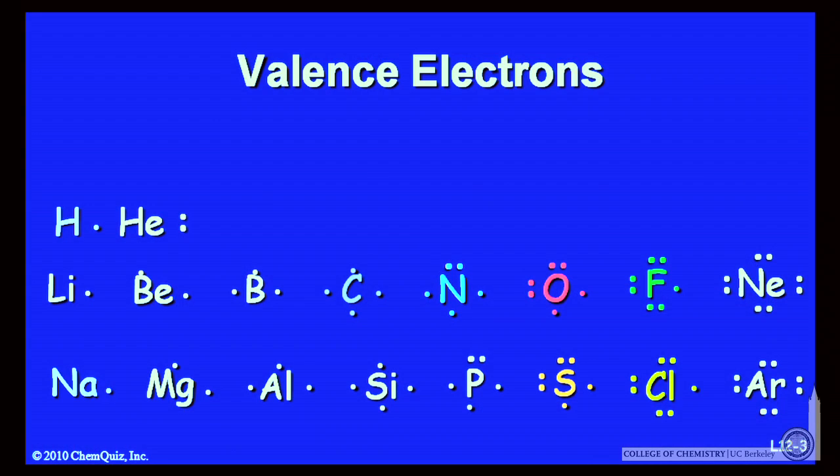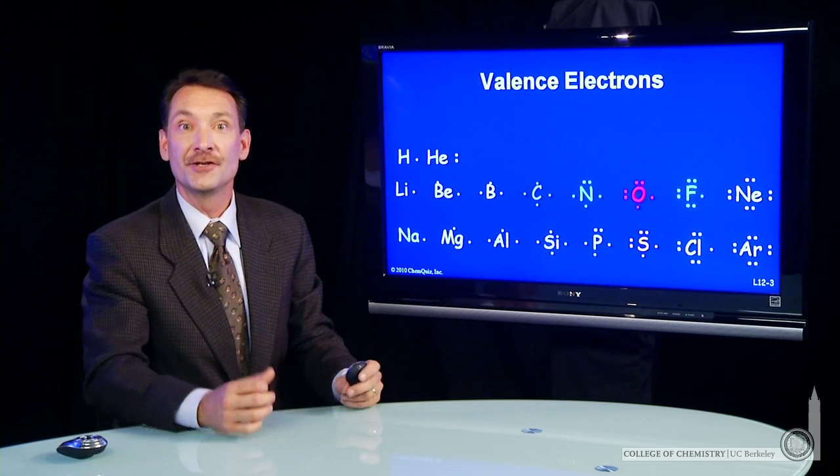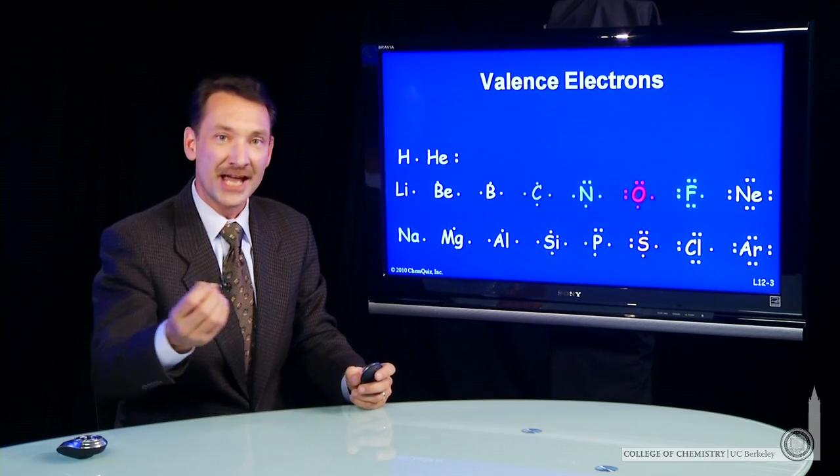These outer electrons we call the valence electrons. They're the electrons that are available for chemical reactions and bonding. And if you have the same number of valence electrons, you'll have the same properties. You'll react the same.